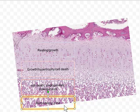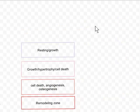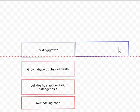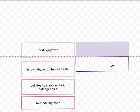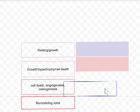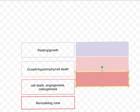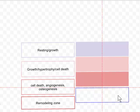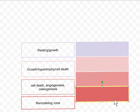So those are the zones. Now to make the explanation a little more simple, I'm going to get rid of the actual picture of the epiphyseal plate. And what I'd like to do now is just to represent the epiphyseal plate by a series of boxes. There's one for the resting zone. Here's one for the growth and hypertrophy and cell death zone. Here's one, a box for the cell death, angiogenesis and osteogenesis zone. And then finally here, here's the region in which bone remodeling actually occurs, so where we have just bone and not much cartilage.